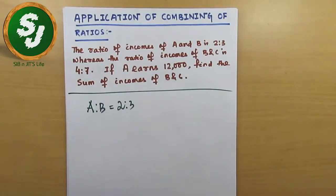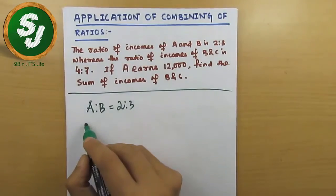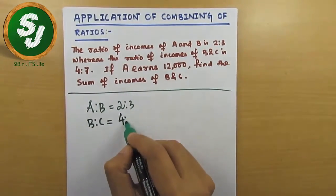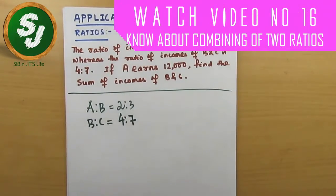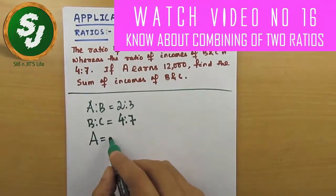Whereas the ratio of incomes of B and C is 4 is to 7, so here it says B is to C equals 4 is to 7. Two different ratios.